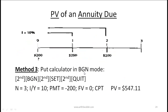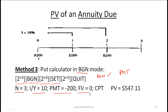A third method is to put your calculator into annuity due mode, or begin mode. Do this by clicking second, then begin — just above the payment button — then second again and set, which is above the enter button. A small 'BGN' will appear on the top right of your calculator, indicating begin mode. Now set N = 3, interest rate 10%, payment = minus 200, FV = 0, and compute present value directly at time 0. Once done, go through the same steps again to exit begin mode.